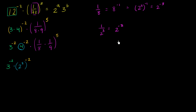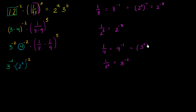By the same logic, 1 ninth equals 9 to the negative 1, or 1 over 3 squared, which is 3 to the negative 2. These are consistent because 9 is 3 squared raised to the negative 1 power, giving 3 to the 2 times negative 1, which is 3 to the negative 2.